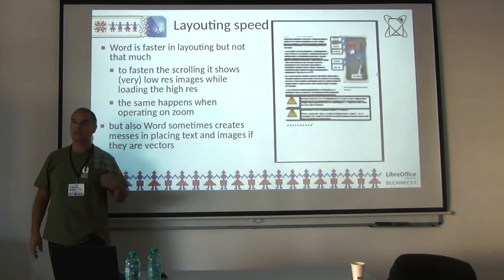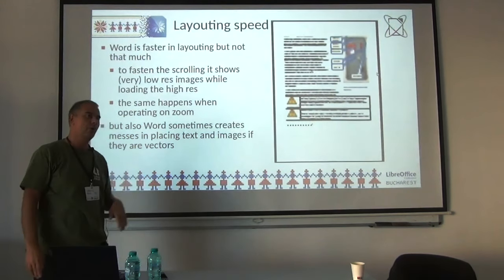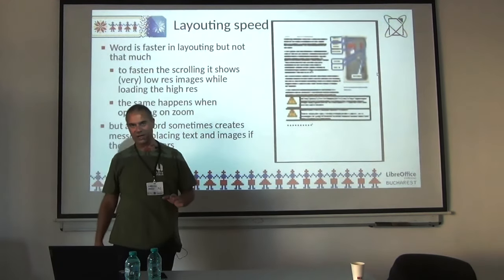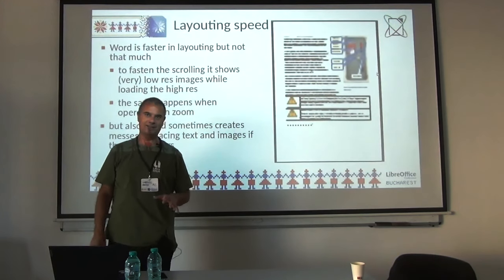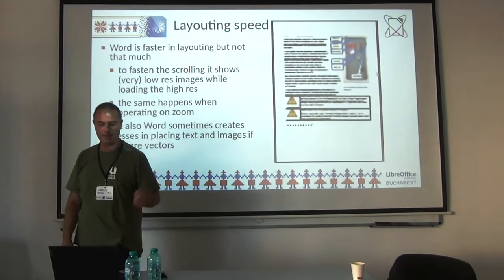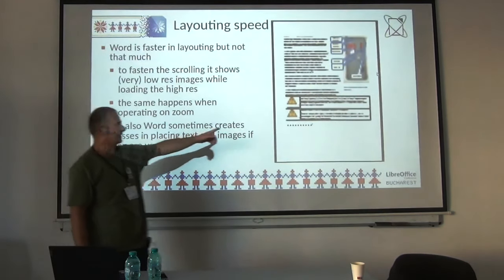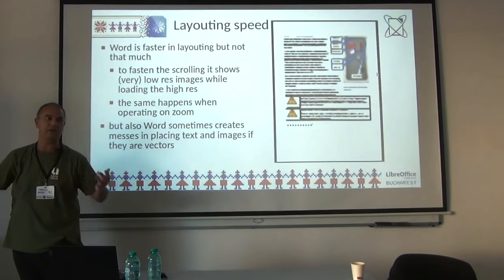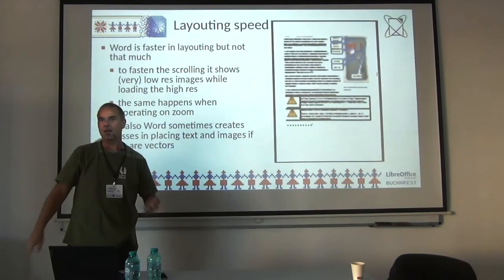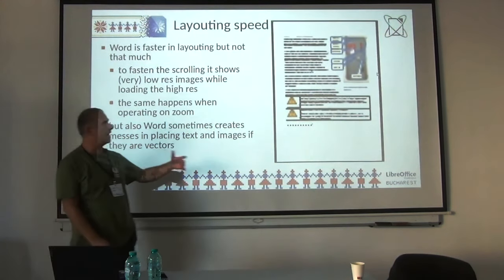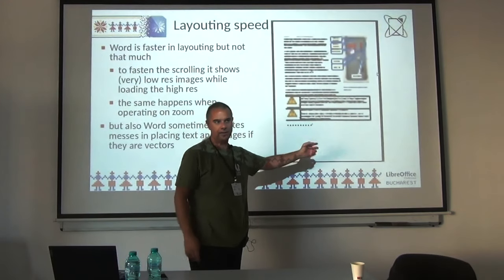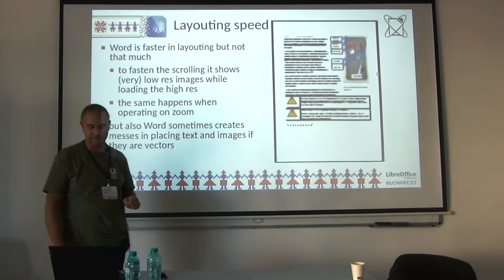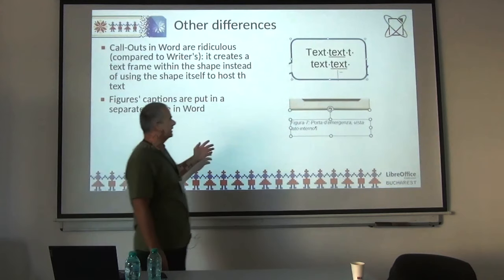The layouting and scrolling of the document is really fast in Microsoft Word, but not that much when you happen to insert many vector images — even Microsoft Word finds difficulties. It uses a trick: it probably has a kind of snapshot or screenshot of the pages, so when you scroll rapidly or zoom in and out it shows you a rough image and then refines it with new rendering, which is by the way really fast.